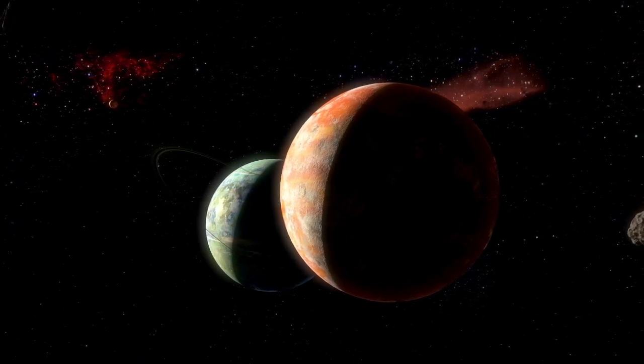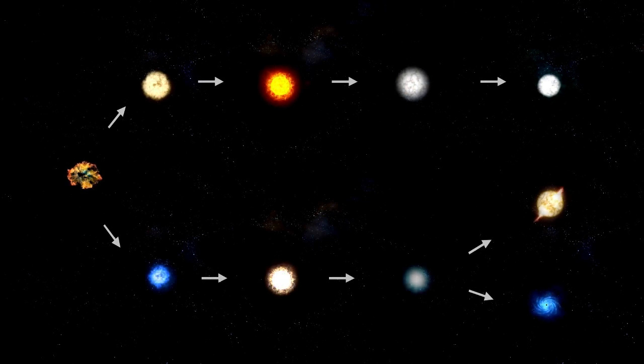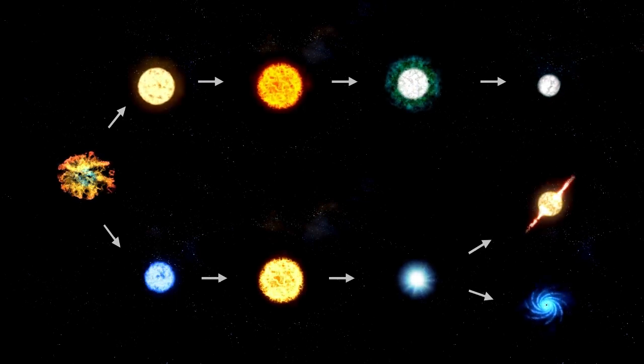If Kepler-70b could influence a star's transformation, how many other planets might be silently shaping the life cycles of their stars across the galaxy?